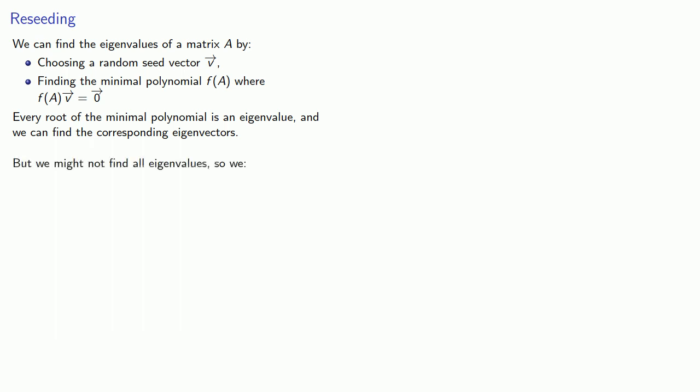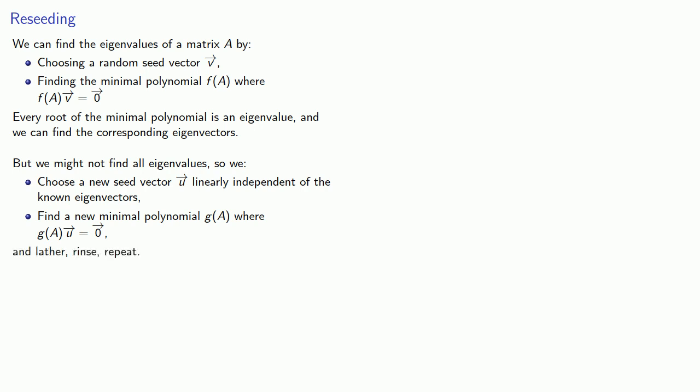But we might not find all the eigenvalues, and so we might have to choose a new seed vector u, linearly independent of the known eigenvectors, and then find a new minimal polynomial g where g applied to u is the zero vector, and lather, rinse, repeat.